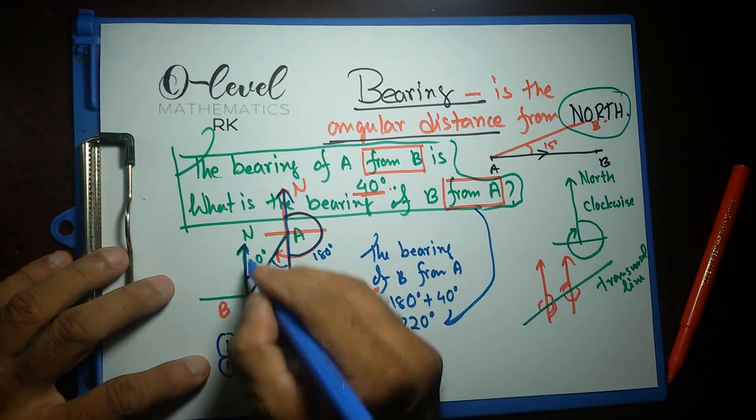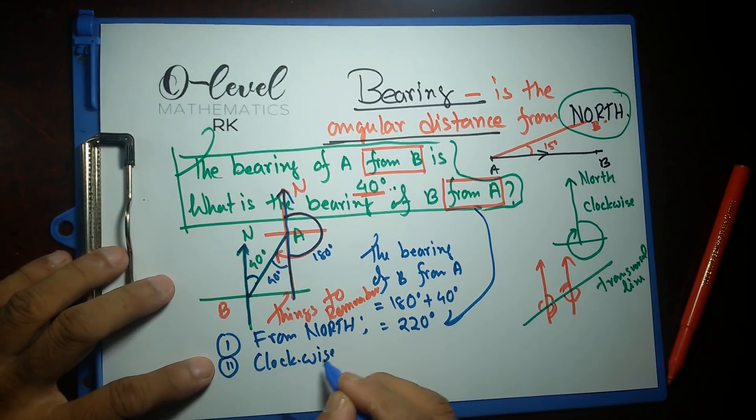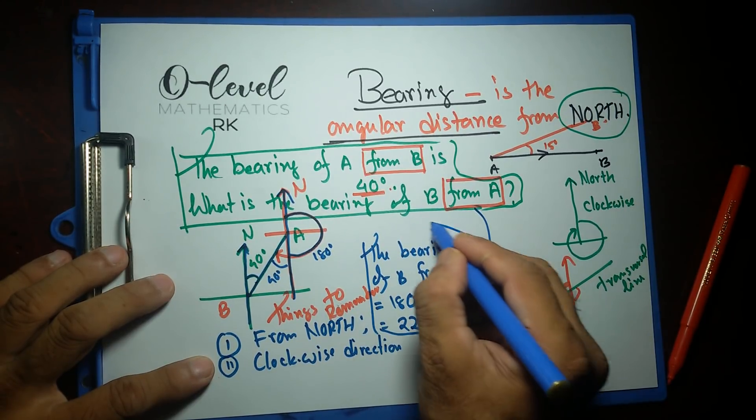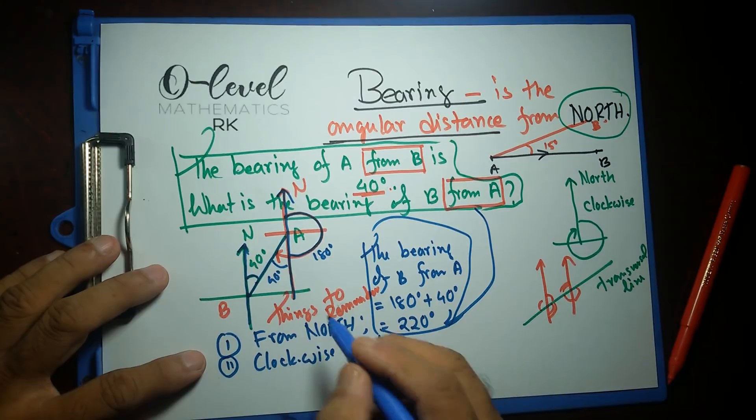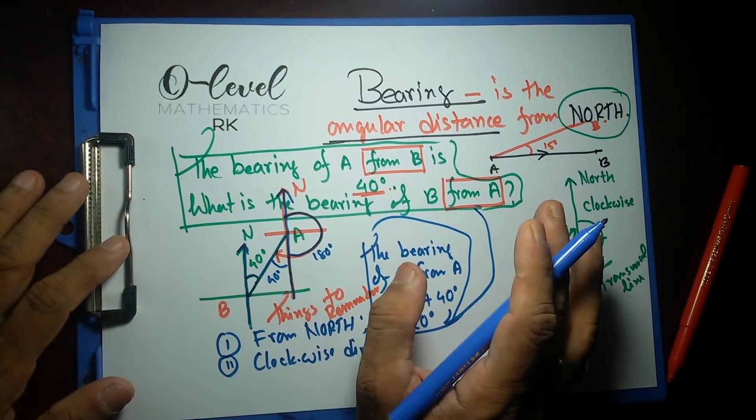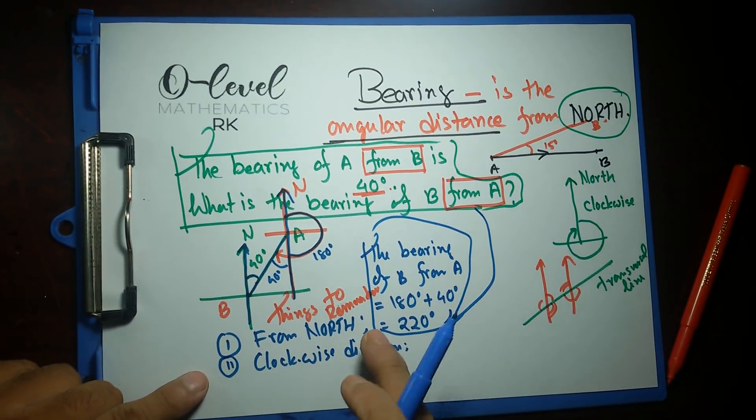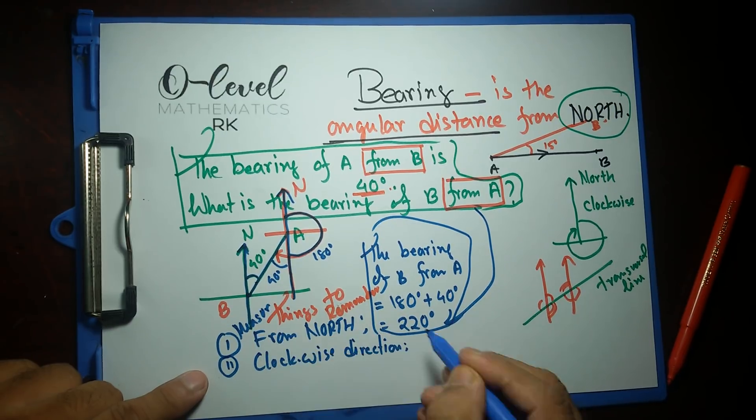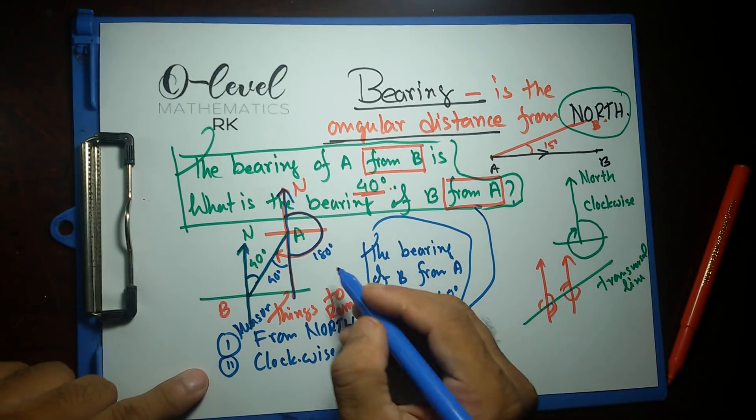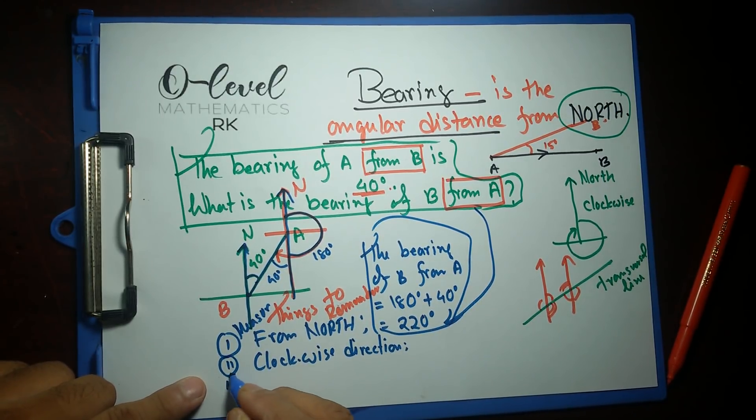Number two: it should measure clockwise direction. Clockwise direction. Probably this is the only one place in O-level maths you'll find out that whenever you go clockwise direction, the angle is positive. Every other concept, most of the concepts, especially in math, all of them are negative if you go clockwise. You should know that. So remember these things. Measure the angle from north. And of course, things to remember number two: clockwise direction. Always clockwise direction. Don't go anti-clockwise direction.